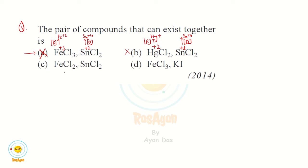In Option C, FeCl₂ has iron in oxidation state +2 and can undergo oxidation to reach its highest oxidation state (+3). SnCl₂ also has tin in its lowest oxidation state (+2) and can undergo oxidation to reach +4. Since both FeCl₂ and SnCl₂ can only undergo oxidation, they cannot react with each other and can exist together. Therefore, the correct answer is Option C.